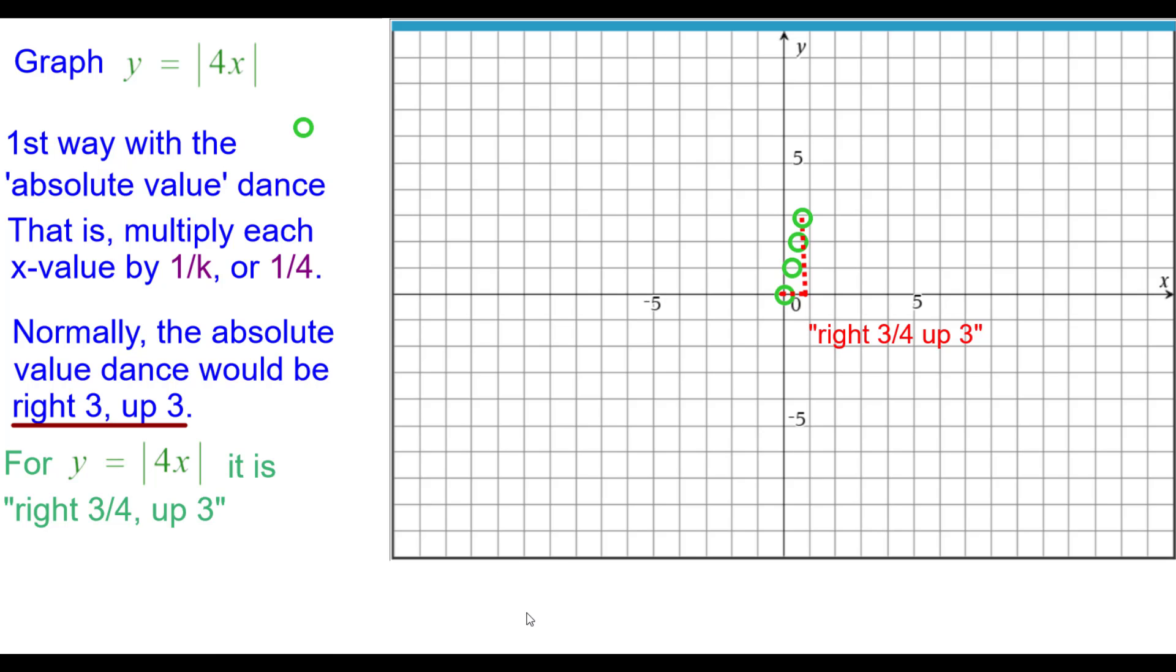Press pause and see if you can get the next 3 points on the left side. Left 1 up 1 is normally on the absolute value dance but for this one it will be left 1 fourth up 1. Left 2 up 2 becomes left 2 fourths or 1 half up 2. And left 3 up 3 becomes left 3 fourths up 3.